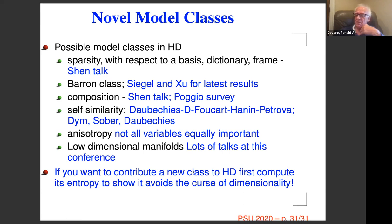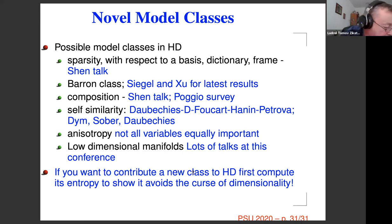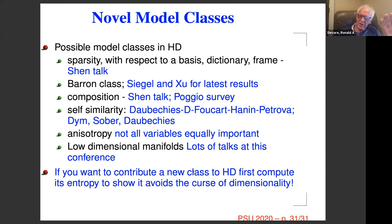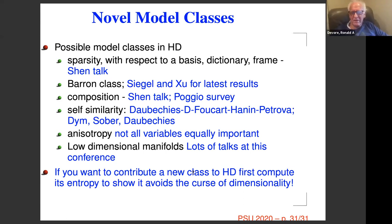Is there a quantitative relation between smoothness classes and their entropy? We know the entropy numbers exactly. The entropy number ε_N — meaning I give you a budget of 2^N balls and see how small you can make their radius to cover K — is N^{-s/d} for Sobolev balls. Entropy is actually easier to compute than proving an approximation theorem. If you're searching for high-dimensional model classes, compute the entropy first: if it's reasonable you know you won't suffer the curse of dimensionality.